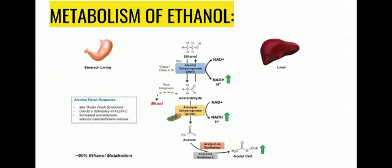Here, the metabolism of ethanol in the body is shown. Ethanol enters the body and alcohol dehydrogenase converts it into acetaldehyde. Acetaldehyde may be secreted into blood and cause toxic hangovers, but if it is broken down into acetate by acetaldehyde dehydrogenase, it is further broken down into acetyl-CoA, which is released in the urine.